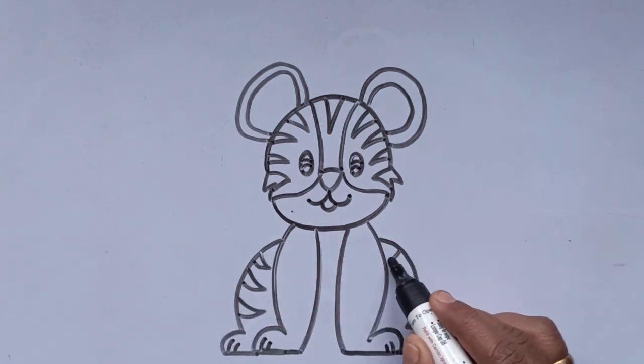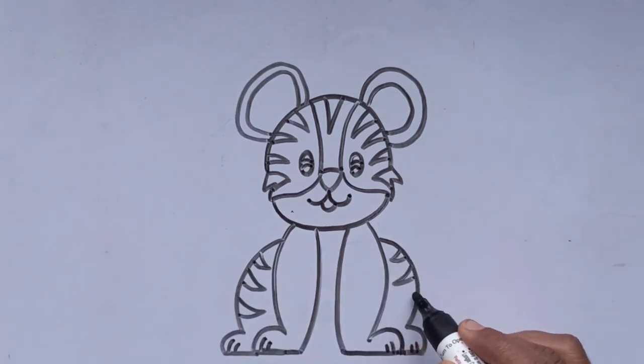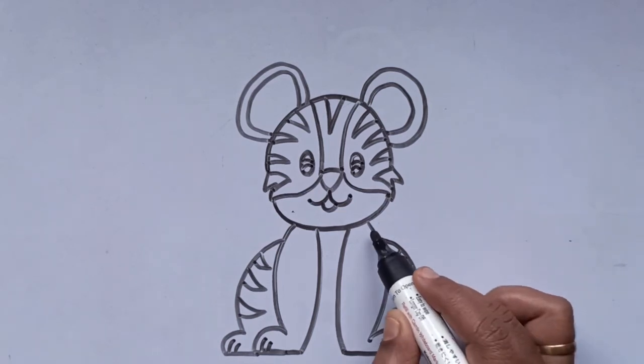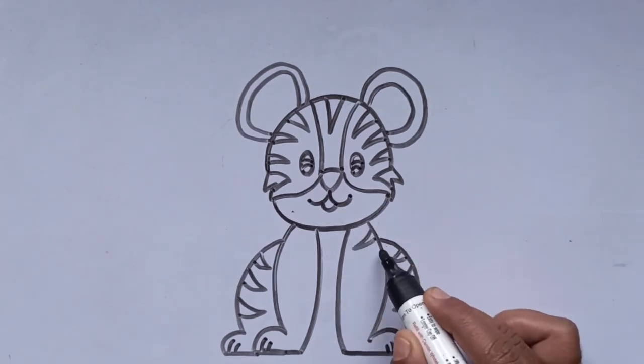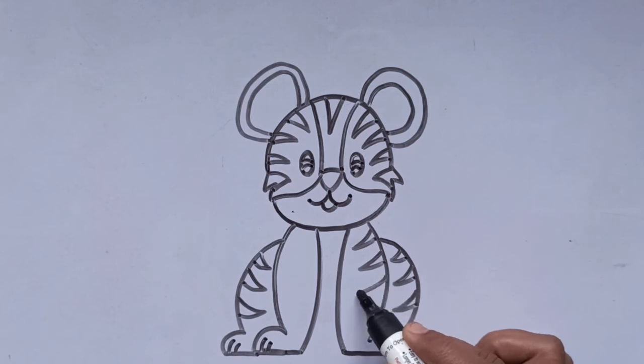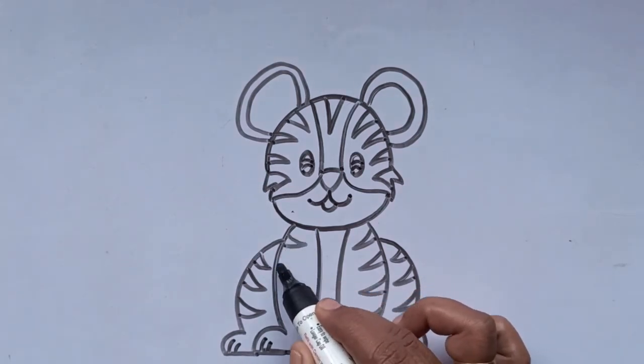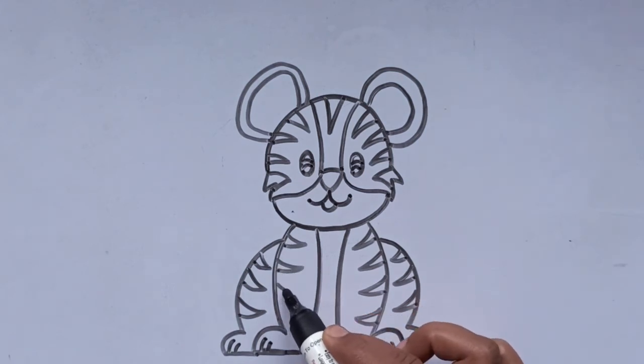Do you know? There are subspecies of tigers. And they are Sumatran tiger, Siberian tiger, Bengal tiger, South China tiger and few more subspecies.